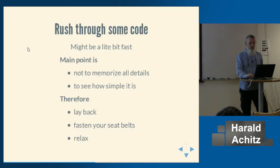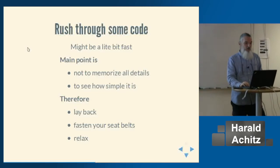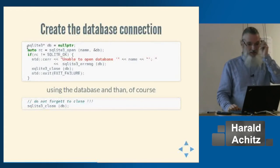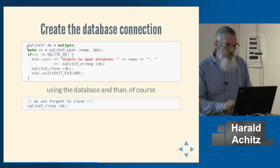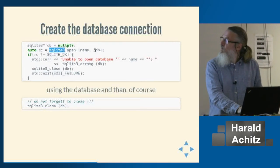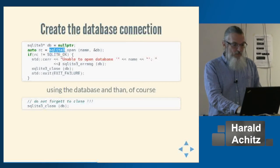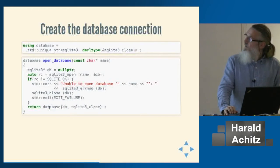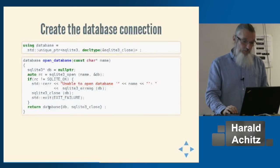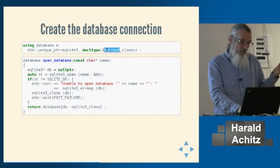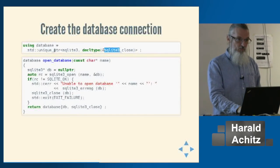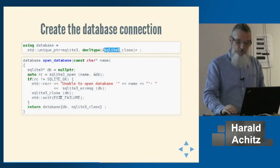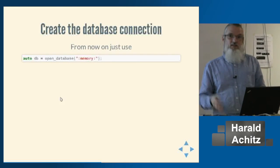Some C++ code. The main point is not to memorize everything but to see how simple it is. Creating a database connection in SQLite uses the C interface: sqlite3_open with a filename and pointer-to-pointer. In C++ we define a type — call it connection or database — using a unique_ptr with sqlite3_close as the deleter, encapsulating the open call to return a unique pointer. From now on you can use it like this and have a database connection.